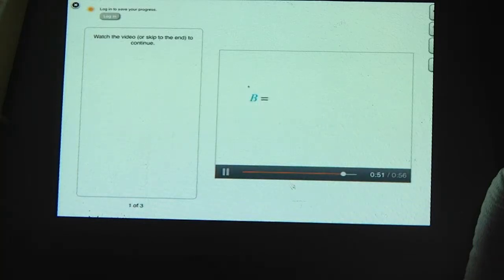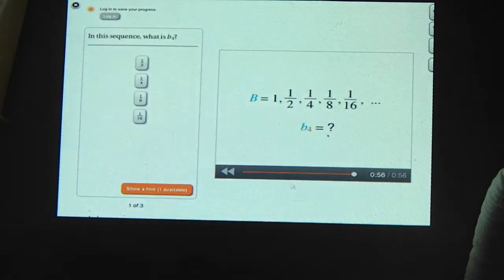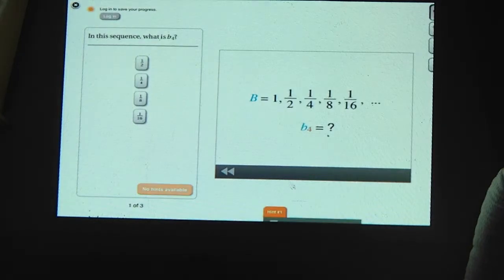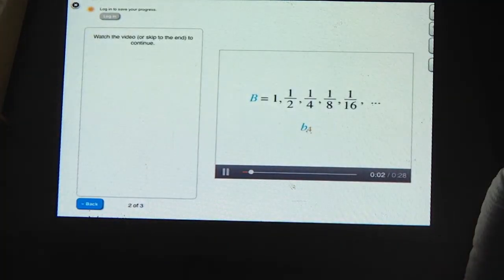Let's look at another sequence, which we'll call B. In this sequence, what is B4? B4 is the fourth element of the sequence. This is the first, second, third, and fourth, so B4 is just 1 eighth. Right. B4 is the fourth term of the sequence, which is 1 eighth.